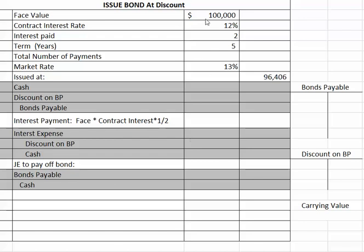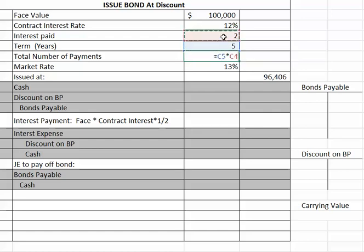We have a bond for $100,000. The contract interest rate is 12%, and interest is going to be paid two times a year. The term is five years. The first thing we're going to do is calculate the total number of payments: five years times two times a year means the total payments on this bond will be 10 interest payments.